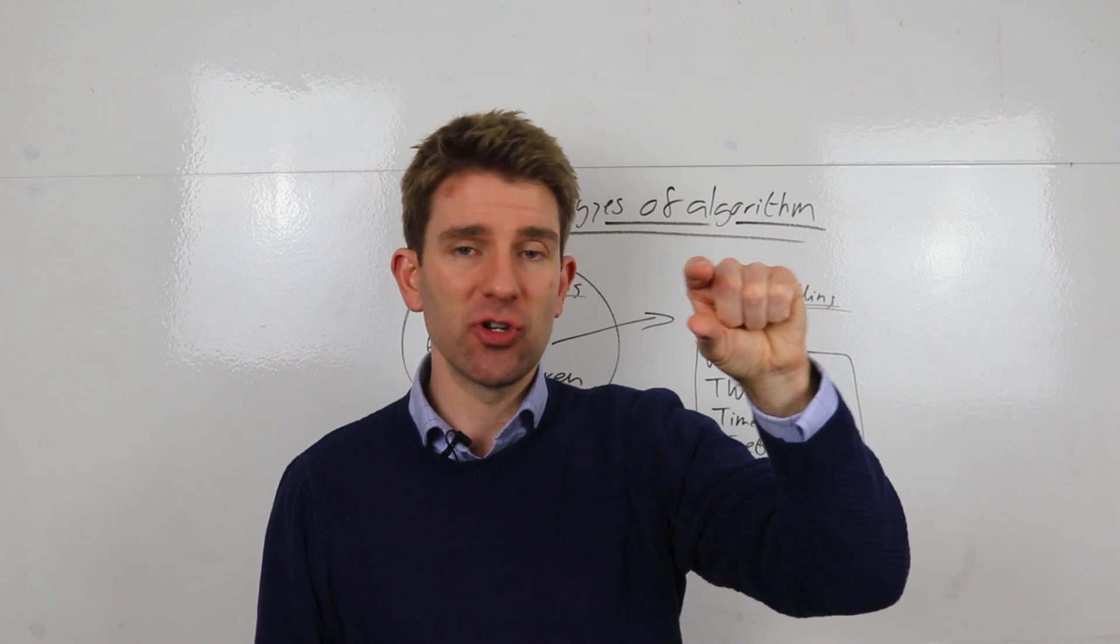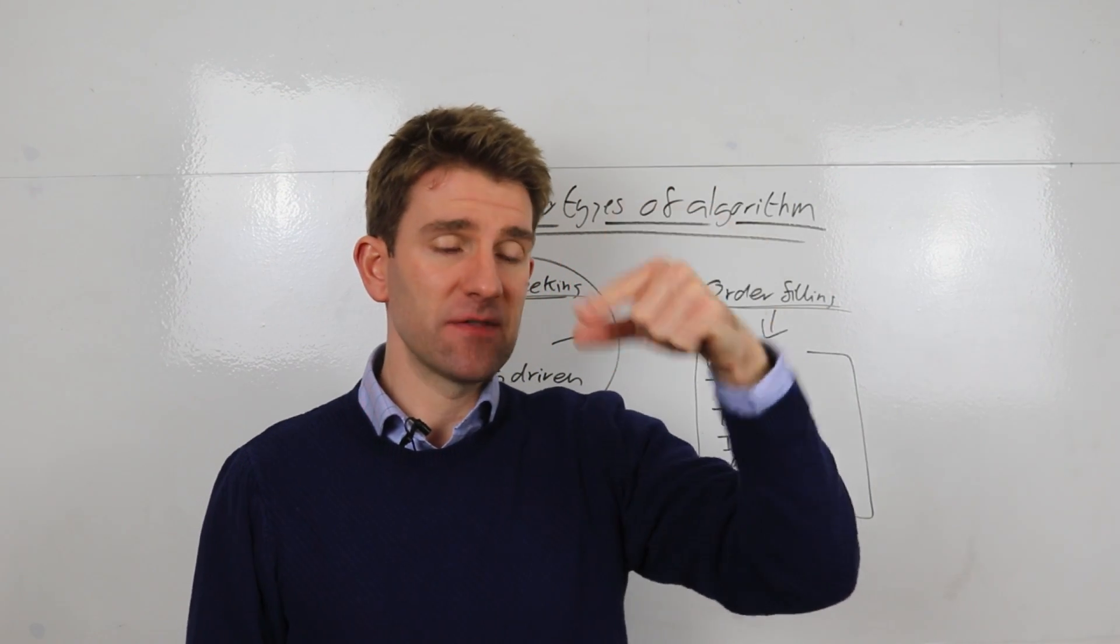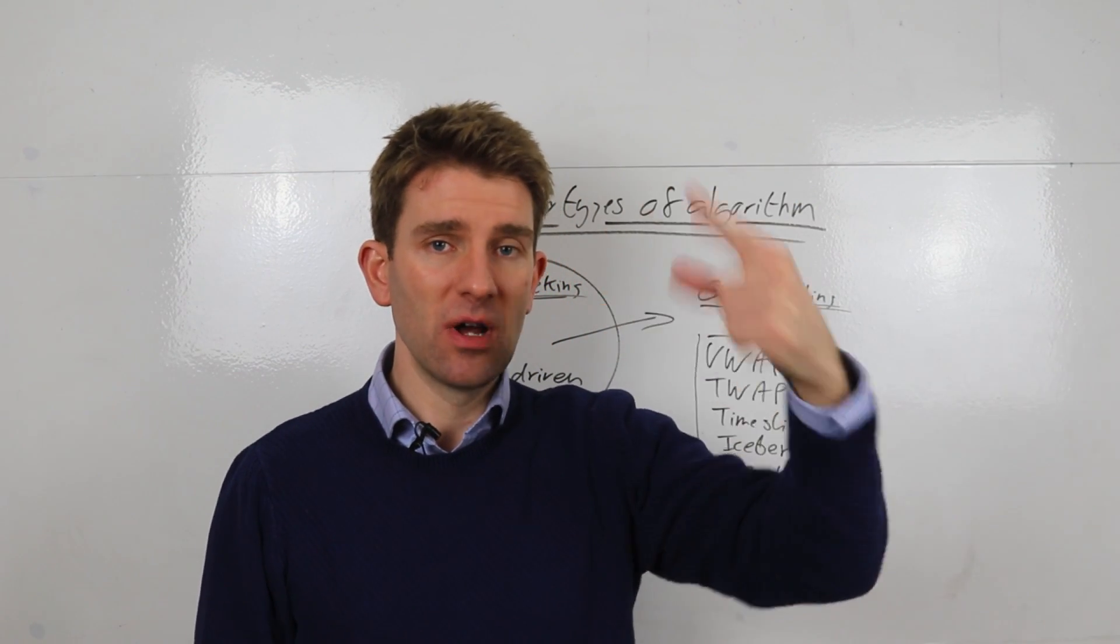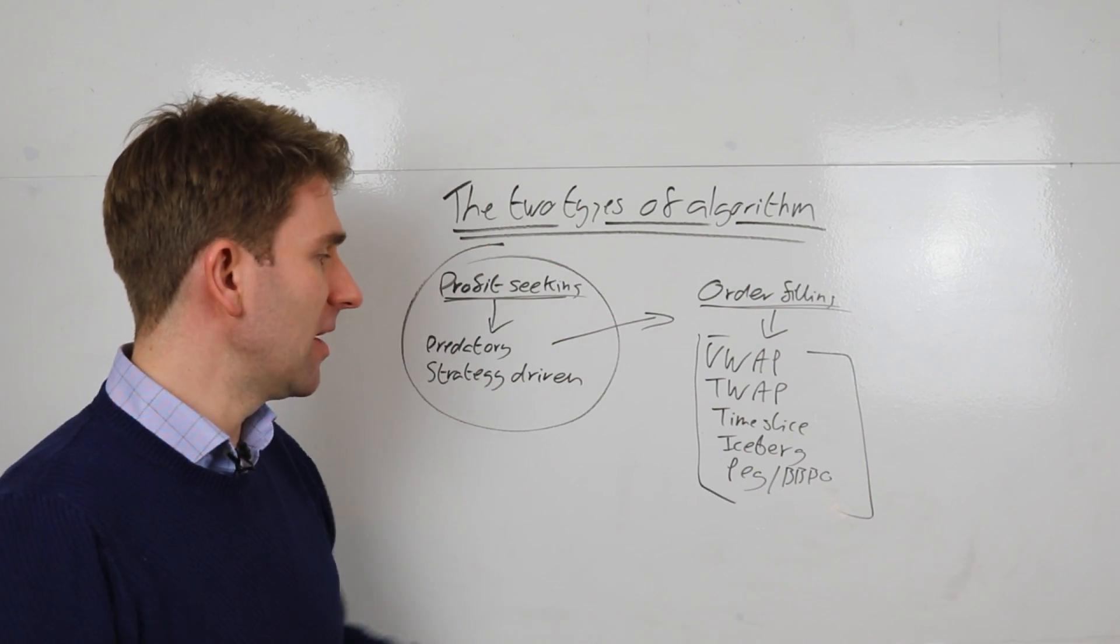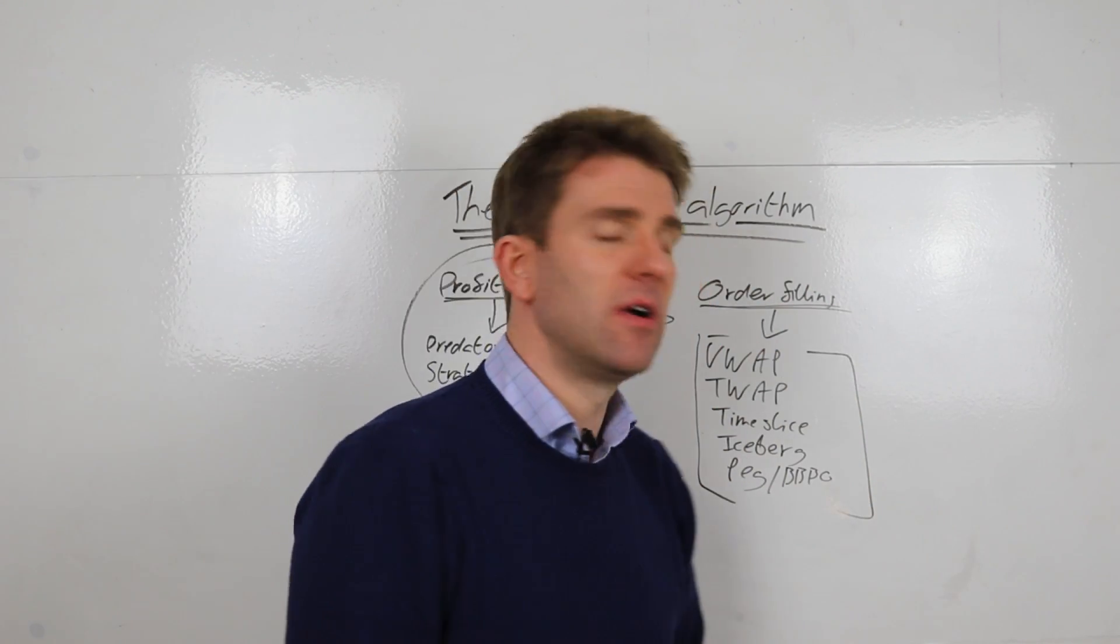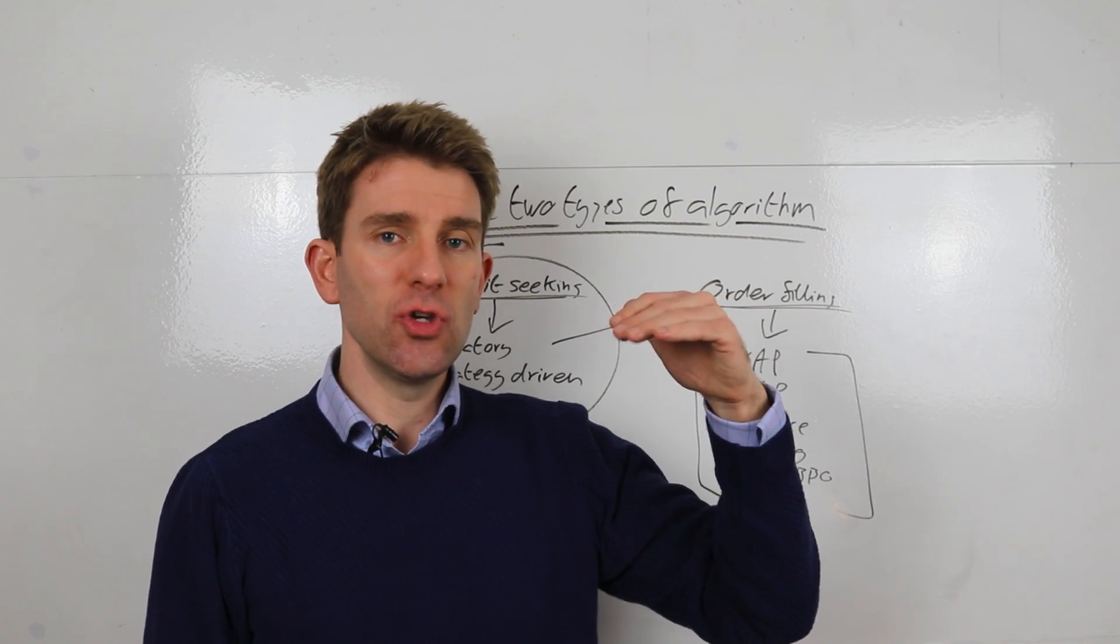Iceberg, where it just shows a very small amount of the top. So let's say you've got a thousand contracts, it might show 10 contracts. Soon as that's filled, it puts another 10 on, another 10 on, another 10 on. So there's a bigger order under the surface, if you like.